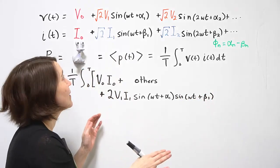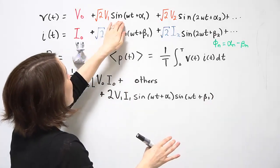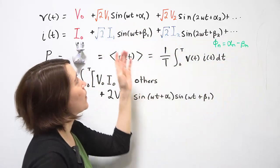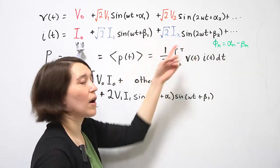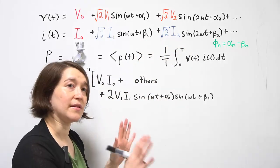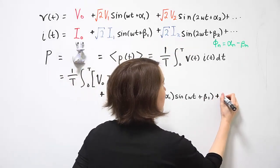We're going to leave that as is. And we're going to then go on to multiply this by the higher order terms. Because the frequencies here are not the same, the average of all of those values are also going to be zero. So we're going to consider that others.